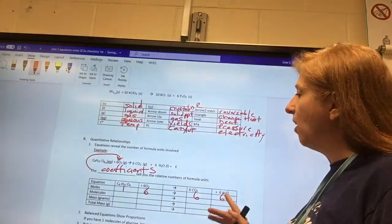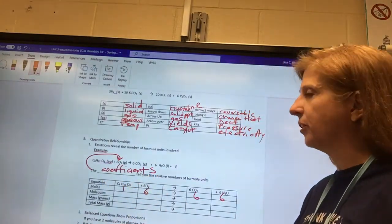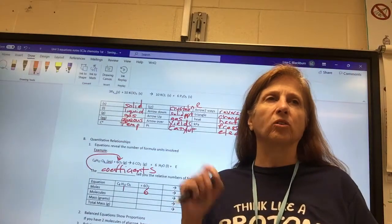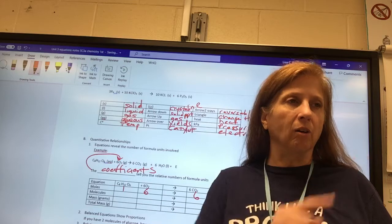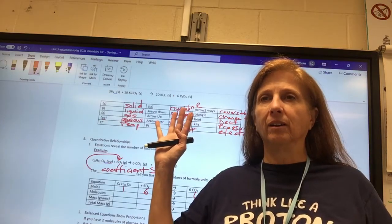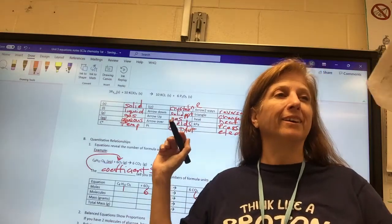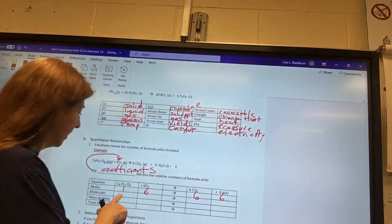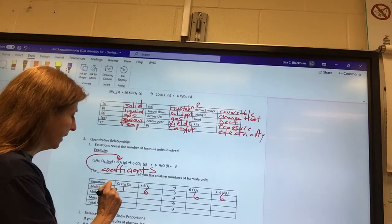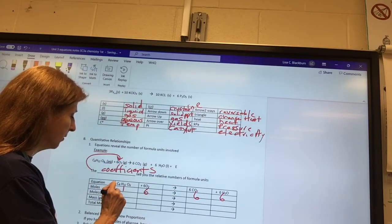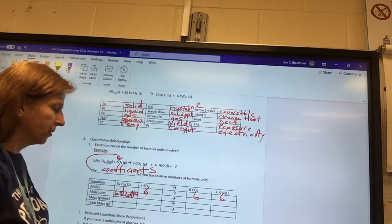It also tells you the number of molecules. How many molecules are in a mole? Do you remember that when we learned it? 6.022 times 10 to the 23rd. So I have one mole of this. So it would be, if I wanted the molecules, it would be 6.022 times 10 to the 23rd molecules.